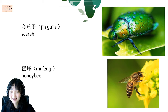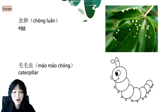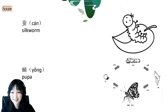And then, egg. 虫暖. So here it is, insect egg. 虫暖. 虫暖. And then, caterpillar, or just worm. 毛毛 虫暖. 虫暖. 虫暖. Good.